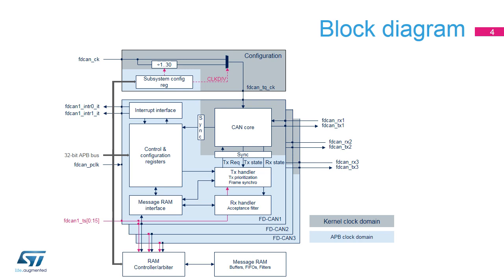The CAN core handles all ISO 11898-1 2015 protocol functions and supports both 11-bit and 29-bit identifiers. The TX handler controls the message transfer from the message RAM to the CAN core, while the RX handler controls the transfer of received messages from the CAN core to the external message RAM. Two clock domains are implemented: the APB bus interface and the CAN core kernel clock, and therefore synchronization blocks are required between these two domains. A shared 0.8-kilobyte message RAM memory is available.